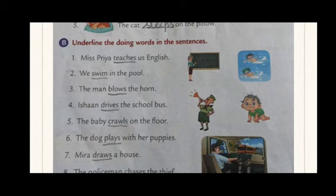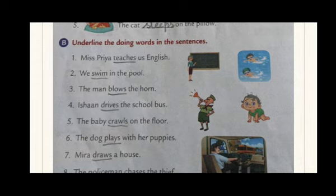Number two: we swim in the pool. The action done by we is swim. Underline the word swim. Number three: the man blows the horn. Man is singular, so we say blows. Now notice in question two, we have not added S to swim. Why? Because we is plural and it is in first person. With a plural subject, we don't use S.